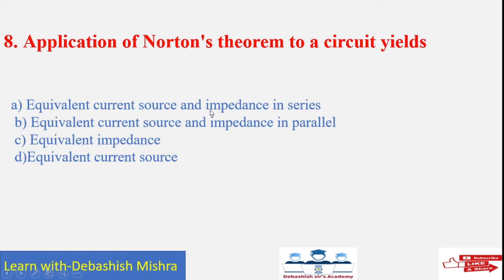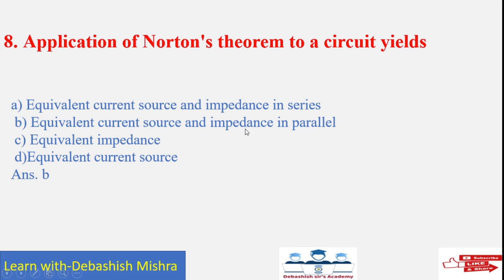Norton's equivalent circuit consists of an equivalent current source and impedance in parallel. Remember the difference: in Thevenin's theorem, it is a voltage source with a series resistance; in Norton's theorem, it is a current source with a parallel resistance. This is the only difference between Thevenin's and Norton's theorem.